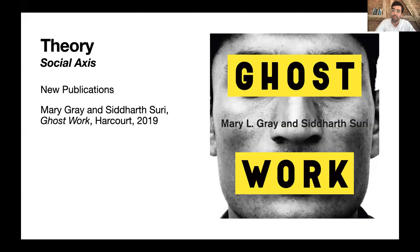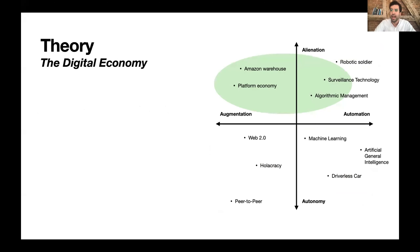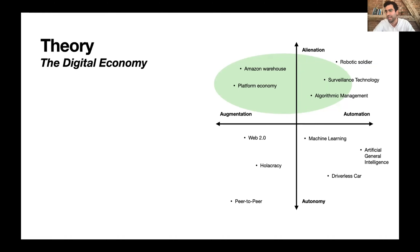— for example, content moderation on platforms like Facebook, showing how much labor actually goes into things that on screen appear to happen through artificial intelligence. Many of these social scientific studies place technologies in quadrants of a two-axis graph, finding that for the most part, technologies are alienating rather than autonomy-enhancing in character, whether they're augmenting or automating.